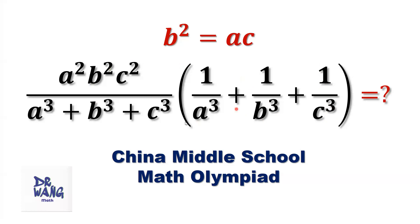In this expression, we have three different variables: a, b, and c. If we directly simplify this expression using the given condition, it's difficult, because those three variables are different. We are going to discuss a new method using this given condition. We rewrite a and b in terms of c, then simplify this expression to derive the finite answer.